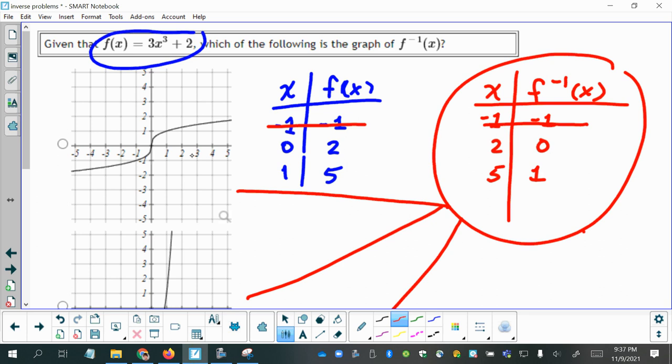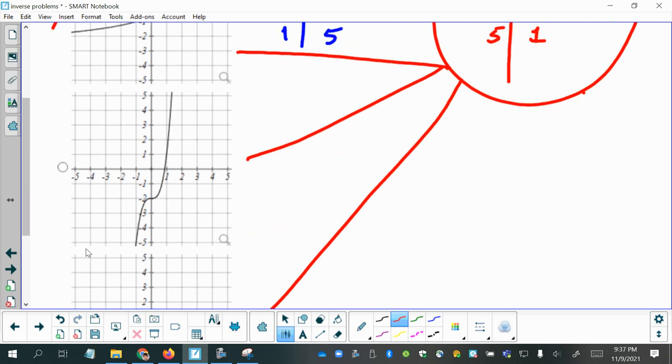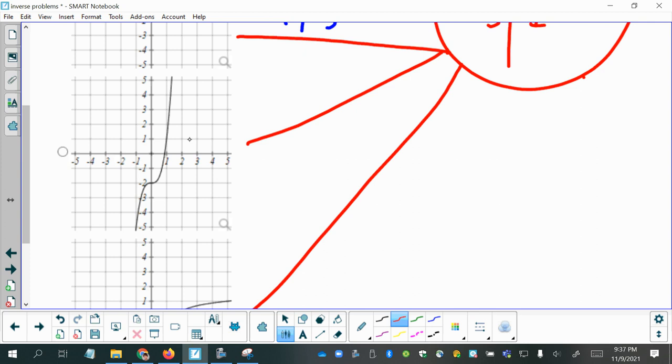So going to 2 on the x-axis, and then 0 does not work out on this first option. Let's try it on the next one. 2 comma 0 does not work out on this one either.